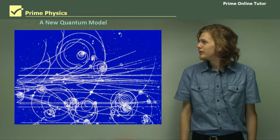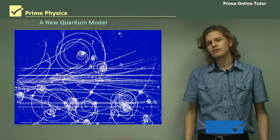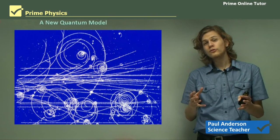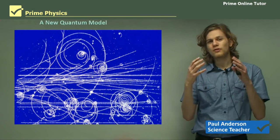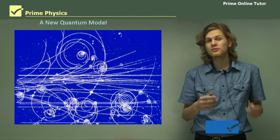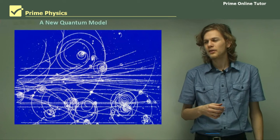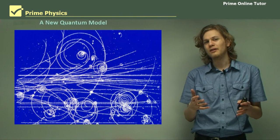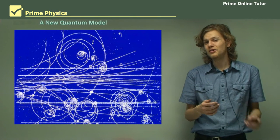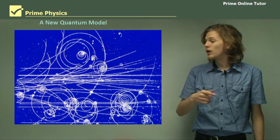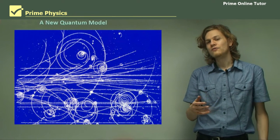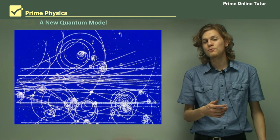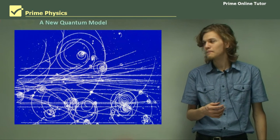Hello, everyone. Today we'll be learning about a new way of looking at physics, a new sort of quantum model that can be used to describe atoms and other very small particles. We can see here a picture of a reaction between a number of very small particles. These little white paths in the photograph are in fact the trails left behind by these tiny particles as they move through a condensation.